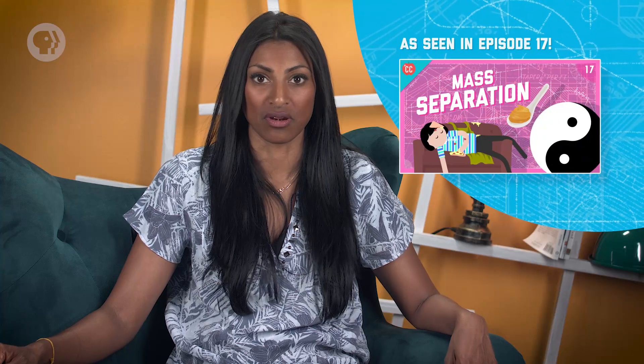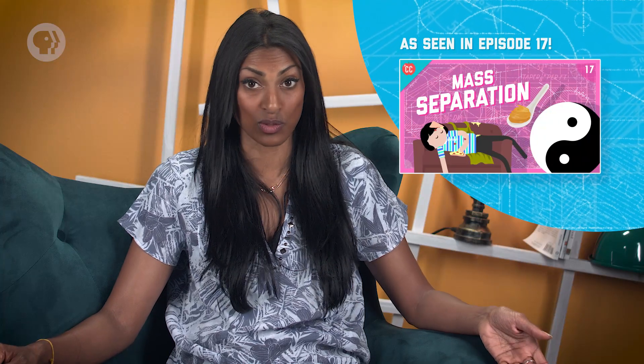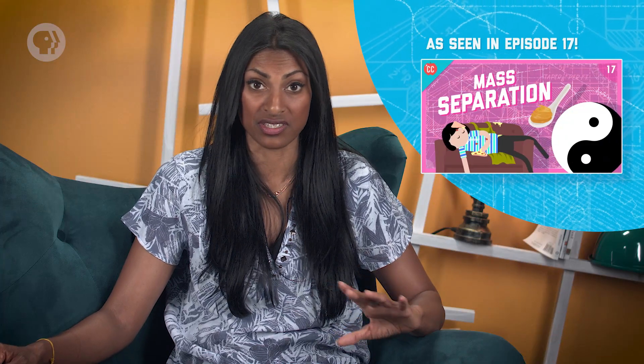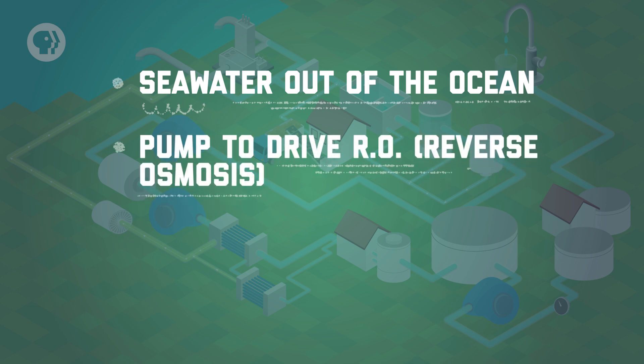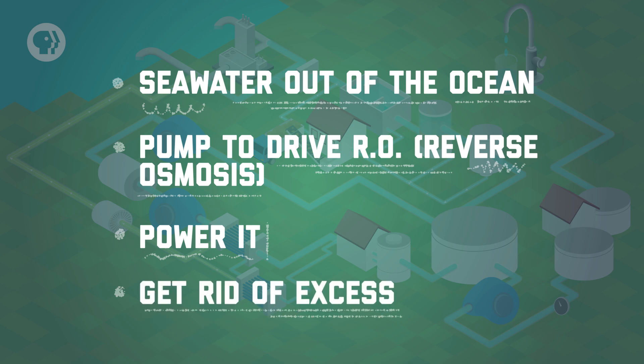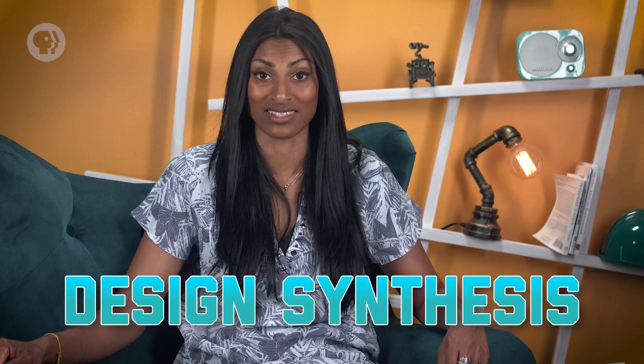The central process of a desalination plant is using reverse osmosis on seawater — by pushing the seawater through a membrane, water coming out the other side is more drinkable, while the salt gets left behind. But there are actually a lot of steps hidden inside that idea. First, you'll need a way to get seawater out of the ocean and into your machine. You'll also need a pump to drive the RO, a way to power it, and some way to get rid of the excess saltwater. Introducing specific equipment to address the needs of your process and then linking them together is called design synthesis.